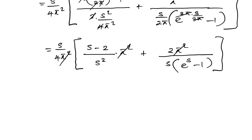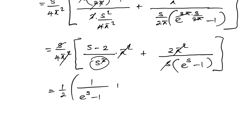After full simplification, all the π² and s factors cancel appropriately. Taking one half as a factor, the final answer is I = 1/2 · (1/(e^s − 1) − 1/s) + 1/2. This is the answer. If you like this type of video, please subscribe to this channel. Thank you for watching.